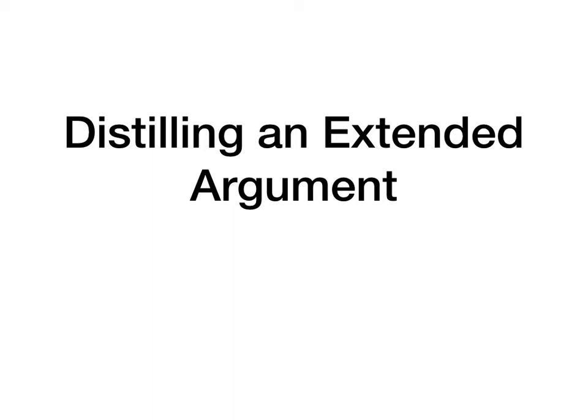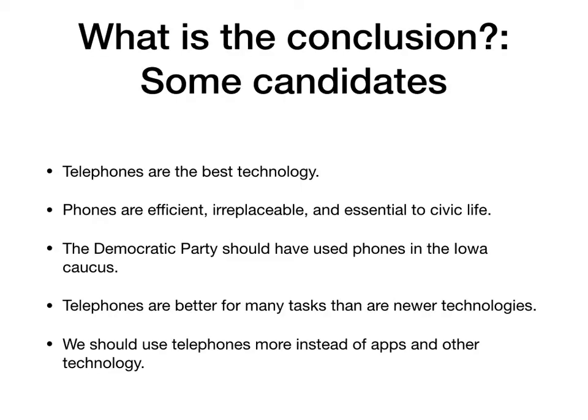I used this a couple years ago the first time I taught Logic. I like the article for reasons we'll get into — I think it is just a good thing to start with when we're going to analyze an extended argument. So the first thing we need to do when tackling an extended argument is what philosophers call distilling an argument. It's basically just putting it in numbered premises and conclusion form, conclusion at the end, premises in a logical or sensible order.